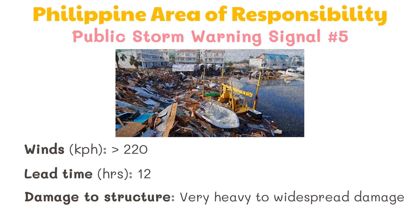Lastly, we have Signal Number Five, also called the super typhoon. Winds of more than 220 kilometers per hour may be expected in at least 12 hours. Very heavy to widespread damage is expected to structures and storm surge of more than three meters is expected in coastal areas. Residents in areas hit by the typhoon should evacuate immediately. An example of a Signal Number Five storm is Typhoon Yolanda in 2013.